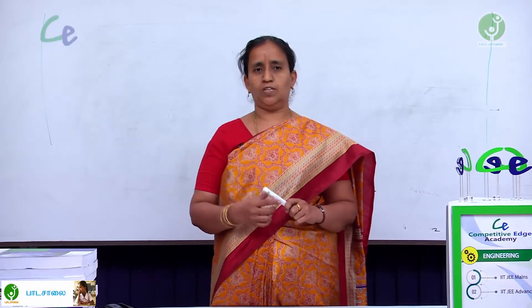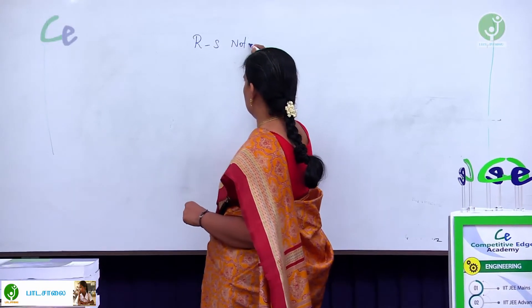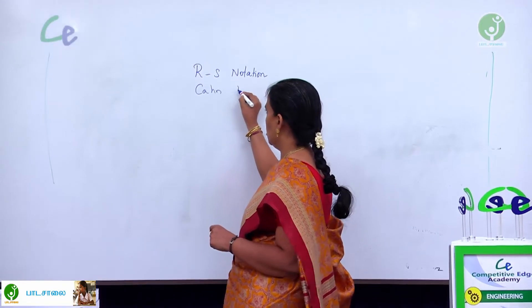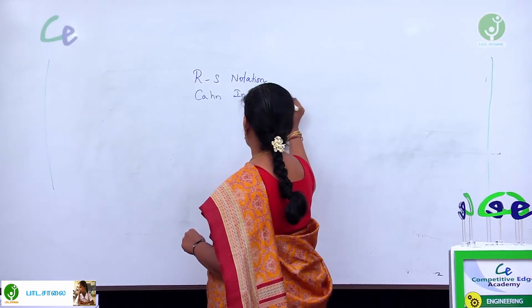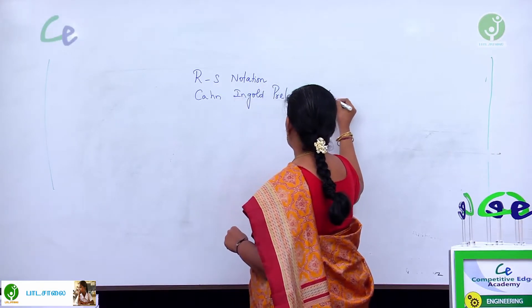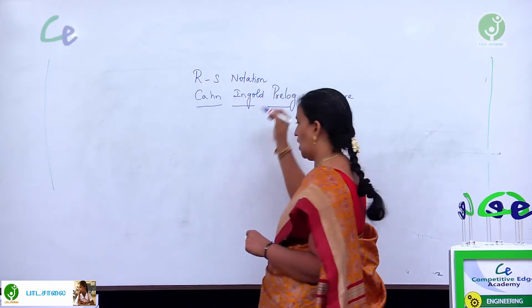What is RS notation? RS notation is nothing but this notation was given by the scientists Cahn, Ingold, and Prelog. This was discovered by three scientists Cahn, Ingold and Prelog.